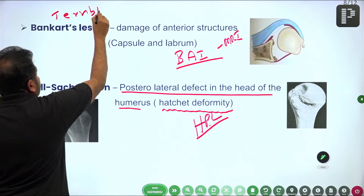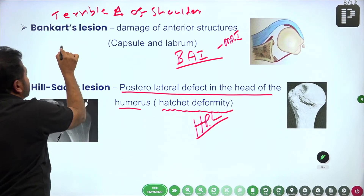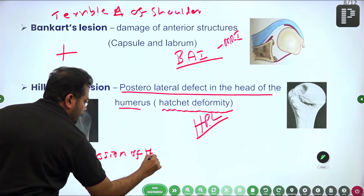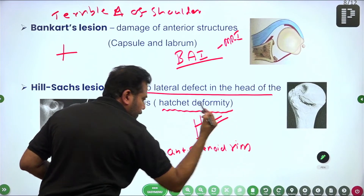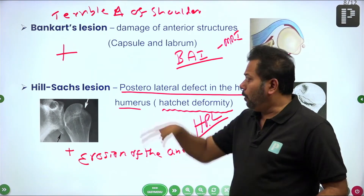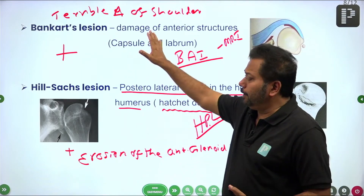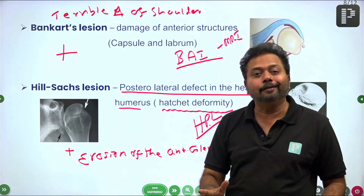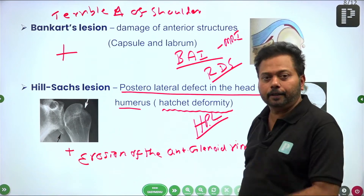The same question will come in NEET PGR. The answer is Bankart lesion. We should also know the terrible triad of the shoulder: Bankart lesion plus Hill-Sachs lesion plus erosion of the anterior glenoid rim. The significance: when an anterior shoulder dislocation patient has all three of these, they are prone to recurrent shoulder dislocation. That is the clinical significance of the terrible triad.